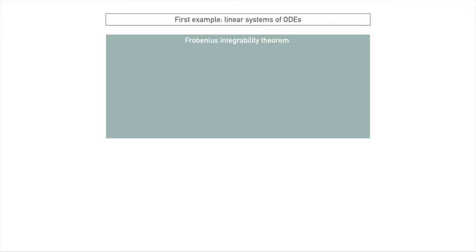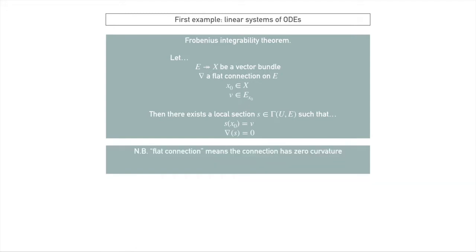One thing we can talk about now is a theorem called the Frobenius Integrability Theorem, and this is a theorem that will let us solve linear systems of ODEs. So what does it say? It says if we have a vector bundle and a flat connection on E, so here a flat connection means a connection whose curvature is identically zero, some point in x, some point in the fiber over this point, so this corresponds to our initial condition, then the Frobenius Integrability Theorem says there exists a local section over some neighborhood u of x0 that satisfies the initial value condition, that is s of x0 is v, and is flat for our connection, that is nabla of s is zero. We say a connection is flat if it has zero curvature.